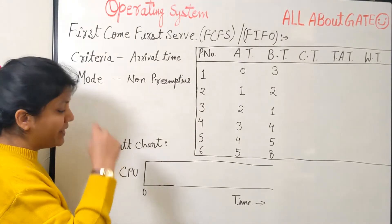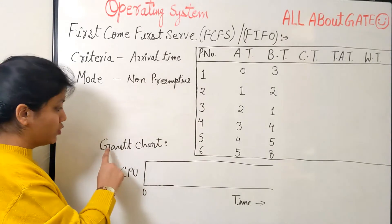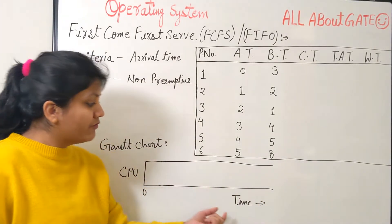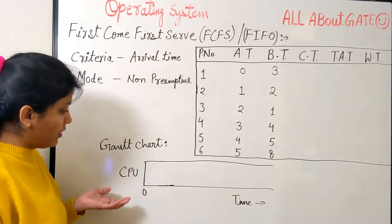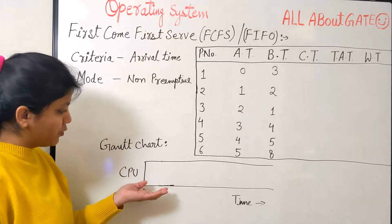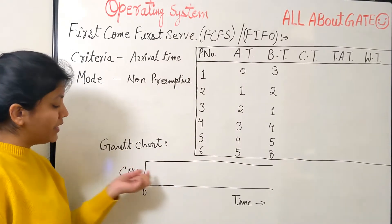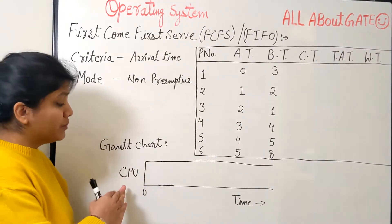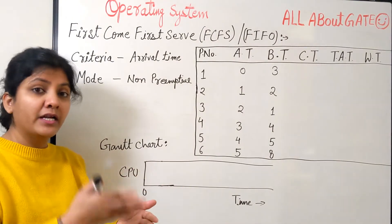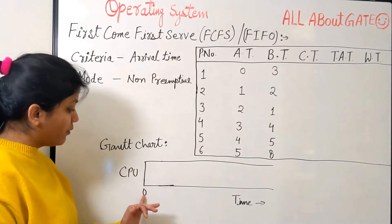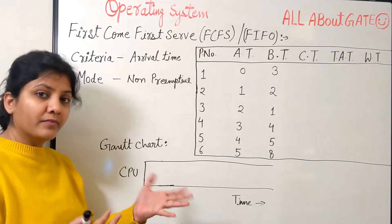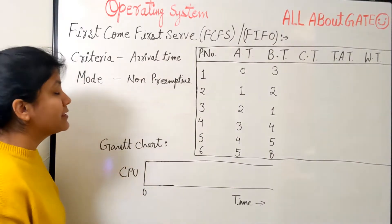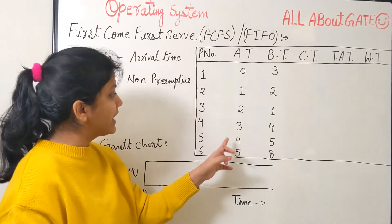To do this we make use of a Gantt chart, where on the x-axis we show time, and at each moment in time we show which process holds the CPU — from which time to which time each process is allocated. So let's start scheduling.